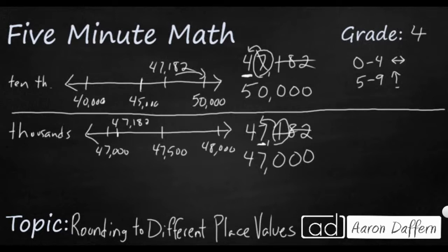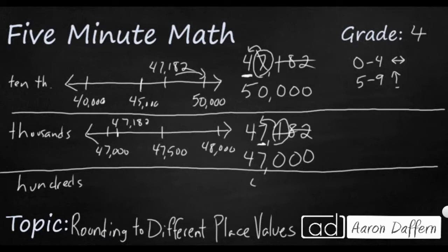Well, what happens if we were to look at the hundreds place? So let's see what happens when we go to the hundreds place. Same number. Let's rewrite it, 47,182. Underline the hundreds place. Look at the digit next to it. That's going to tell you what's going to happen. We know any digits in front of it are going to stay the same.